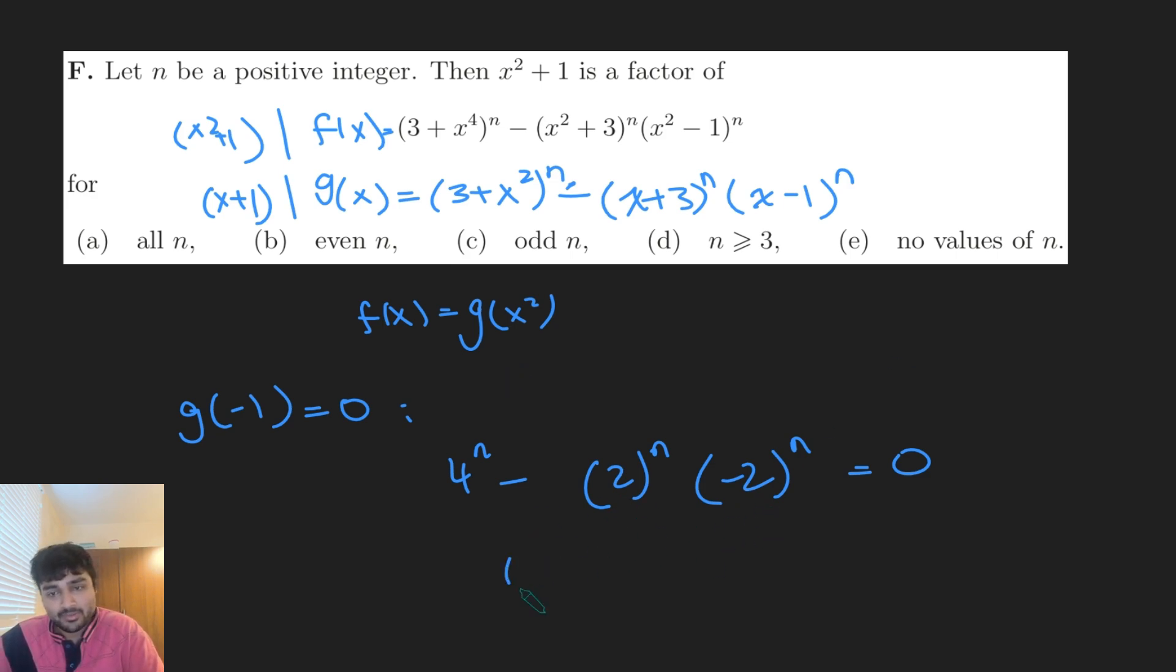And now if I strip out the -1, this is 4ⁿ equals (-1)ⁿ times 4ⁿ. And this is true if and only if n is even. And so my answer here is (b).